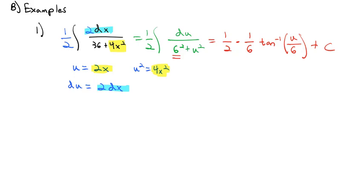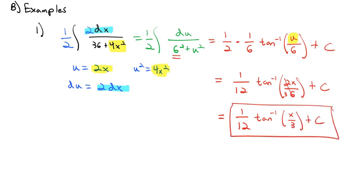Now going back and putting that u in, we'll end up with our final answer, multiplying the fractions to get 1/12 tangent inverse of u, which is 2x, divided by 6 plus c. Well, actually, not quite final answer, because we can reduce that 2 over 6 to get 3. So for our final answer, we'll say 1/12 tangent inverse of x over 3 plus c is our anti-derivative.